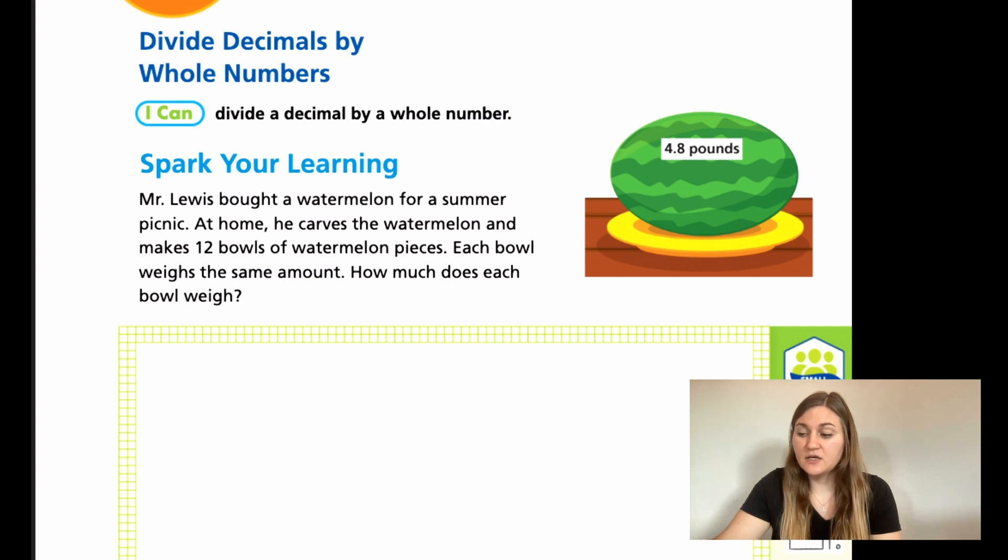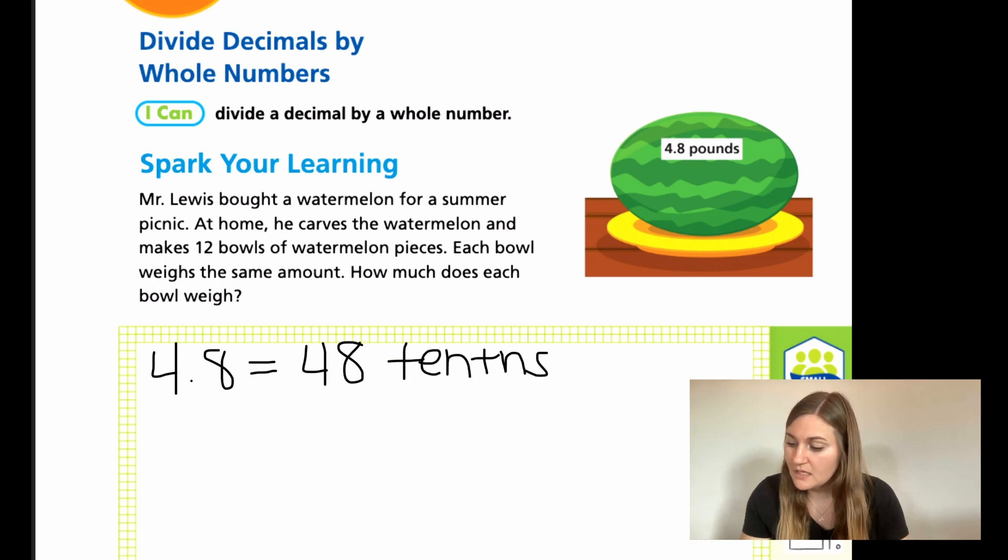So I see that I have 4.8 pounds. And just like we've been doing, if we know we are going to be dividing, we can rearrange this number. So instead of 4.8, I'm going to look at this as one big number so that I can divide it up. So I'm going to look at it as 48 tenths.